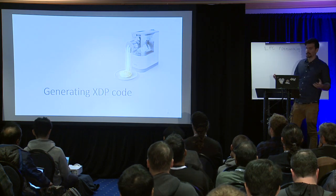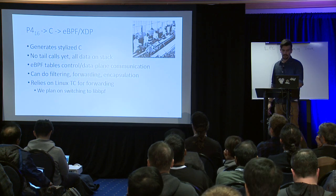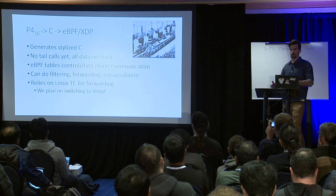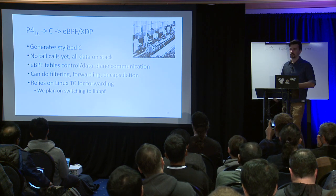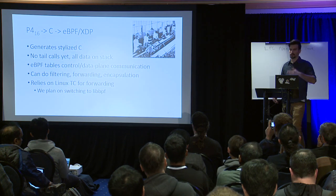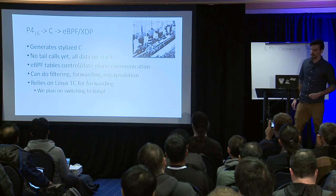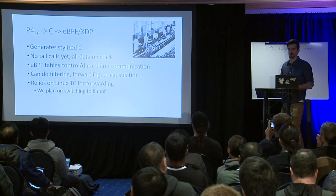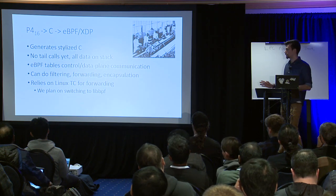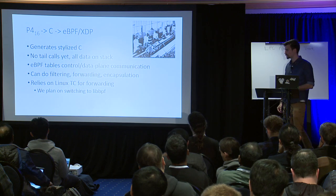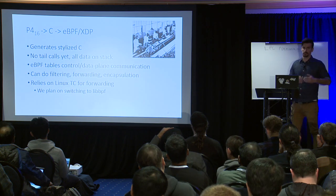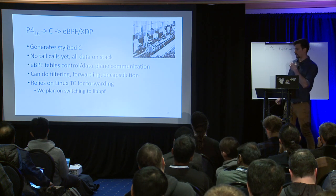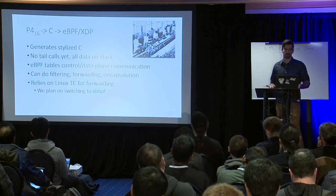To generate XDP code, we have a specific pipeline where we first insert a P4 program and generate XDP C code — a stylized C that's very specifically pre-formatted. We don't use tail calls at all right now; that has a bunch of complexity and we're trying to get there. So all data is currently on the stack and we generate a lot of variables.